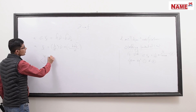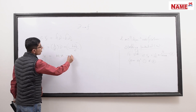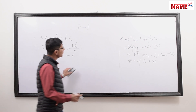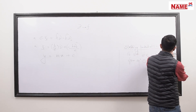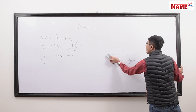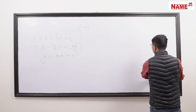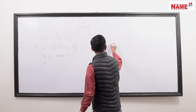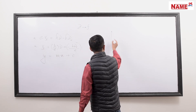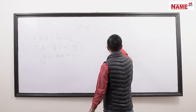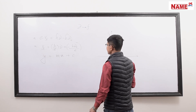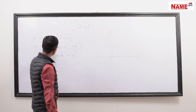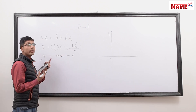We plot a graph with stopping potential Vs on the y-axis and frequency ν on the x-axis. Since h and e are constants, the slope h/e is constant. Frequency is the variable x. There is a negative y-intercept C equal to −hν₀/e.